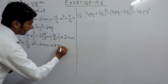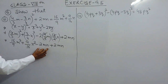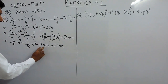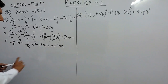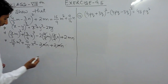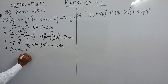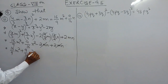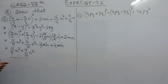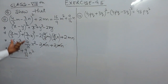So 2mn will remain as it is. To further solve this, mn and mn are like terms — they are exact copies — so the plus and minus cancel out. The remaining answer is 16 upon 9 m square plus 9 upon 16 n square, which is exactly equal to the right hand side. This is how we prove that left hand side is equal to right hand side.